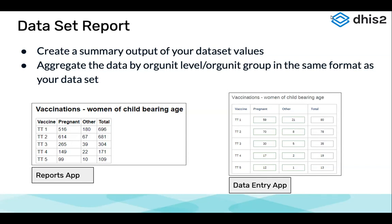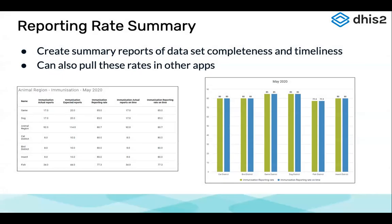A data set report creates a summary output of the data set values. It comes out in the exact same format that a data set appears on the data entry side of DHIS2. For example, you can see a report showing vaccinations for women of childbearing age with vaccines, pregnant, other, total, and the numbers — exactly how it appears on the data entry app.